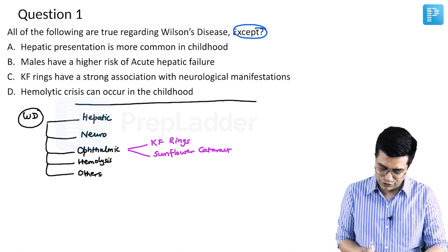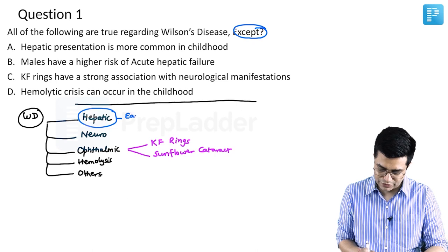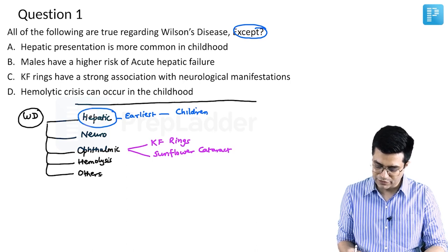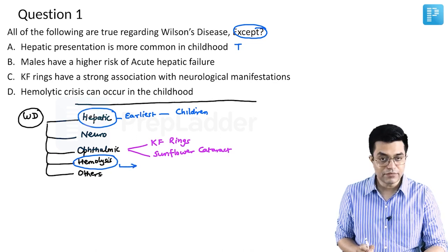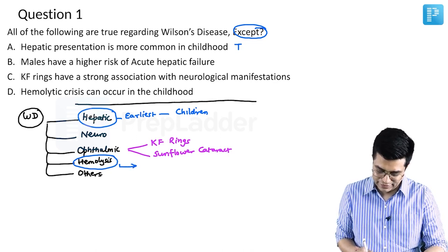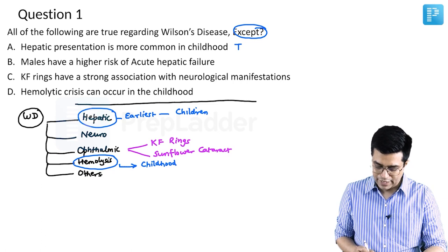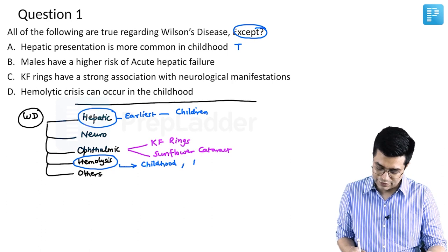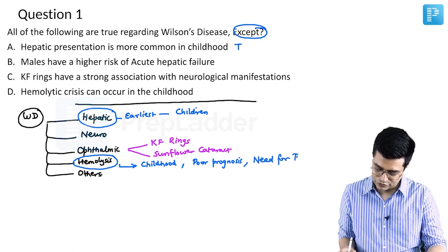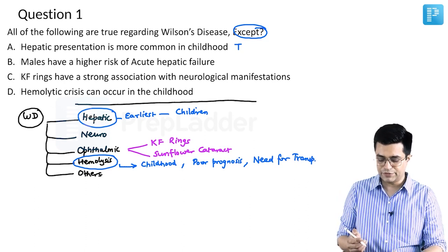Hepatic manifestation is considered the earliest manifestation and the form most commonly seen, so option A is a true statement. Regarding hemolysis, it can occur any time but is more commonly seen in childhood, though cases in adolescence or adulthood have occurred. Wilson's disease with a hemolytic presentation usually has a poor prognosis and a high need for liver transplant.